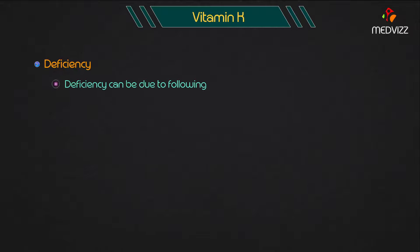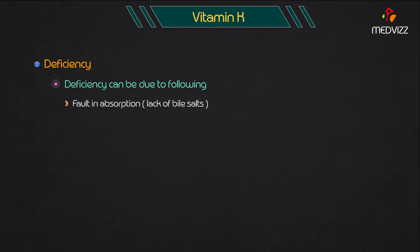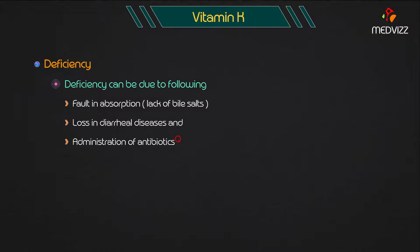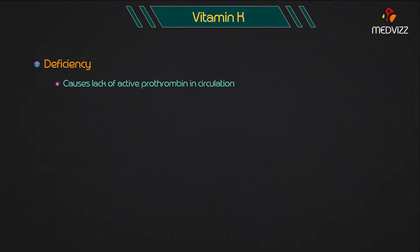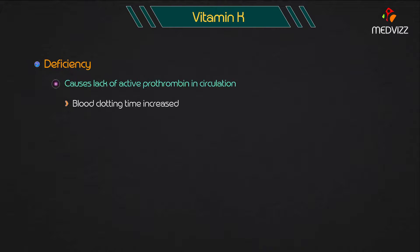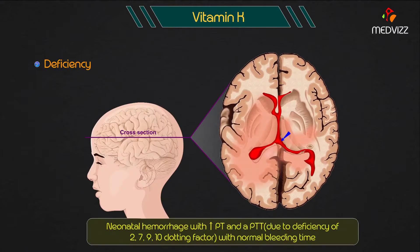Deficiency can be due to: a fault in absorption due to lack of bile salts, loss in diarrheal diseases, and administration of antibiotics. This causes a lack of active prothrombin in the circulation, which results in increased blood clotting time and profuse bleeding following minor injuries.